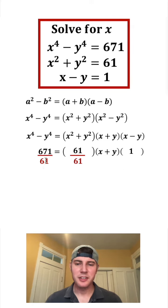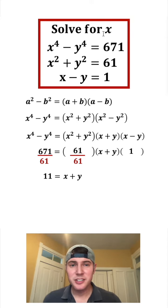If we divide both sides by 61, this left hand side is 11, and on the right hand side all we have left is the x plus y. So we've solved for x plus y, but we need to solve for x.